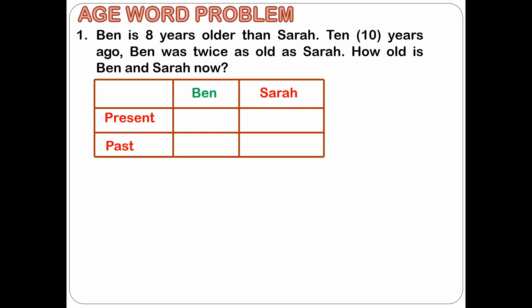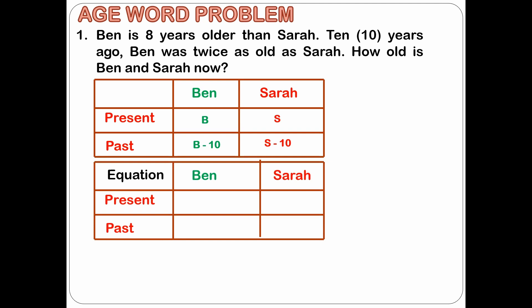We will call Ben's present age as letter B and Sarah's as letter S. In the past, that is 10 years ago, Ben's age will be B minus 10 and Sarah's age 10 years ago will be S minus 10. Now let's put another table so that we can write an equation for the present and past. At present, Ben is 8 years older than Sarah, so it means that B is equal to S plus 8.